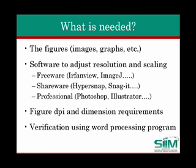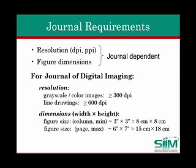Figure resolution and size dimension details are necessary, and once the figure is created, a verification of proper figure dimensions, fidelity, and content using a word processing program is highly recommended as the final step. Requirements for figure resolution and dimensions depend upon the specific journal. For the Journal of Digital Imaging, the resolution requirement for grayscale and color images is a minimum of 300 dots per inch, and line drawings are a minimum of 600 dots per inch. The image dimensions must be adjusted according to the required figure size. For JDI, a column size figure width is scaled to 3 inches, while a page size figure width is scaled to 6 inches. It is important to maintain aspect ratio so that the pixels in the output image remain square.